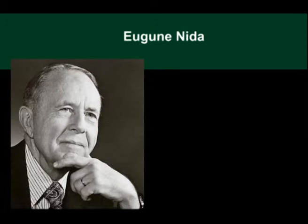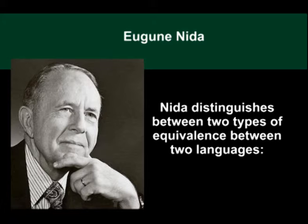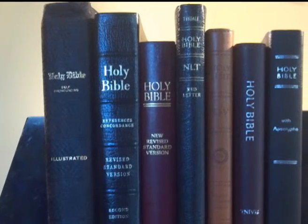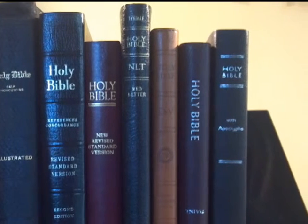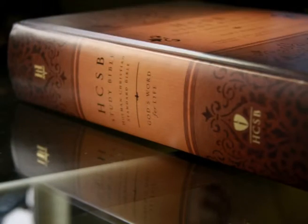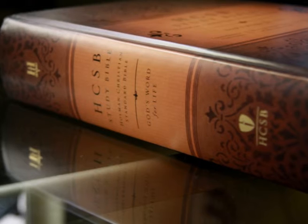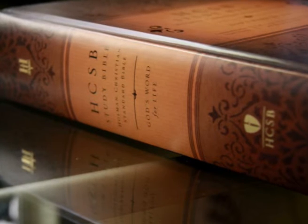Concept of Equivalence. Nida and Tabor define translation as the reproduction in a receptor language of the closest natural equivalent of the source language message, first in terms of meaning and second in terms of style. Nida distinguishes between two types of equivalence: formal equivalence or correspondence, which is the quality of a translation in which features of the source text have been mechanically reproduced in the receptor language; and dynamic equivalence, which is the quality of a translation in which the message of the original text has been so transported into the receptor language that the response of the receptor is essentially like that of the original receptors.